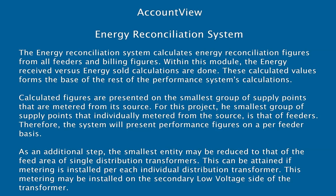The energy reconciliation system calculates energy reconciliation figures from all feeders and billing figures. Within this module, the energy received versus energy sold calculations are done. These calculated values form the base of the rest of the performance system's calculations. Calculated figures are presented on the smallest group of supply points that are metered from its source. For this project, the smallest group of supply points individually metered from the source is that of feeders.